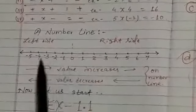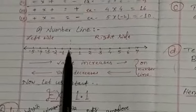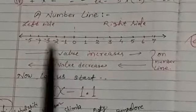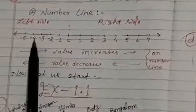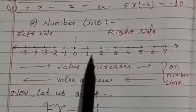Now consider the number line. The middle part is indicated by 0. All negatives are written on the left side: minus 1, minus 2, minus 3, minus 4, minus 5. On the right side from 0, you write positive numbers: 1, 2, 3, 4, etc. Value increases when we go on the number line from left to right. For example, minus 5 is smaller than minus 4, minus 4 is smaller than minus 3, minus 3 is smaller than minus 2, 0 is smaller than 1, and 2 is smaller than 3.